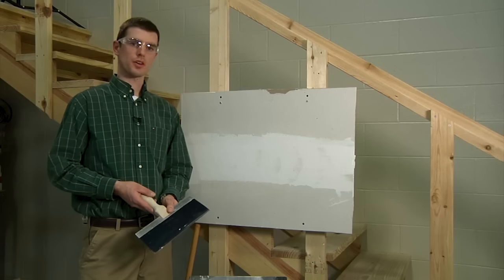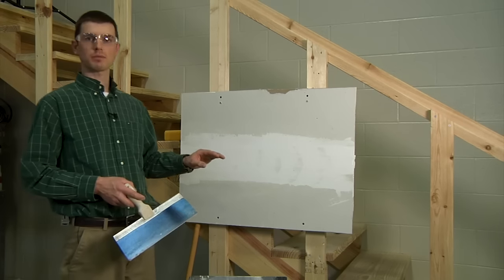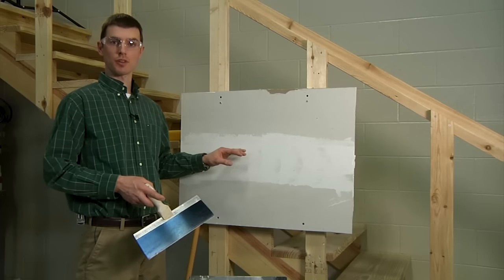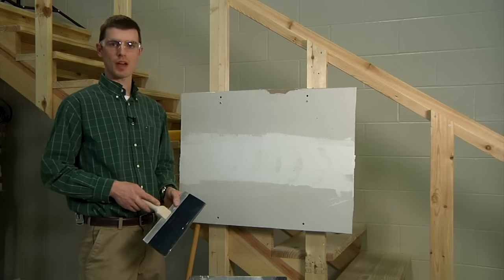Okay, we are ready for our third step here in the finishing of a drywall joint. We've applied our tape, allowed it to dry, put our first finishing coat, and now we're ready for our second finishing coat of compound on this joint.